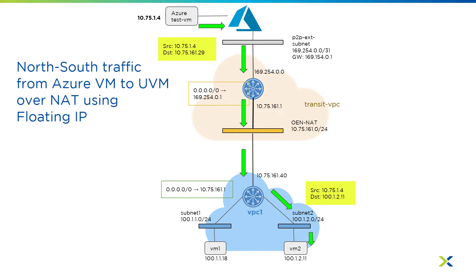On the flip side, if we're going in the reverse direction and this is the new initiating traffic, we have this test VM wanting to reach VM2 — maybe VM2 is a web server. Its destination is 10.75.161.29, which would be a floating IP assigned here. Since this is a native Azure IP, it knows how to forward the traffic to the FlowGateway virtual machine. It flows through, and then we will change the destination from the NAT IP or the floating IP to our 100.1.2.11, and the traffic will flow through.